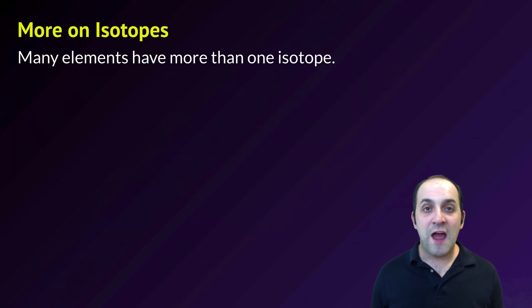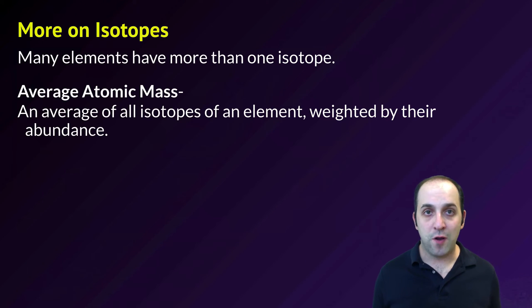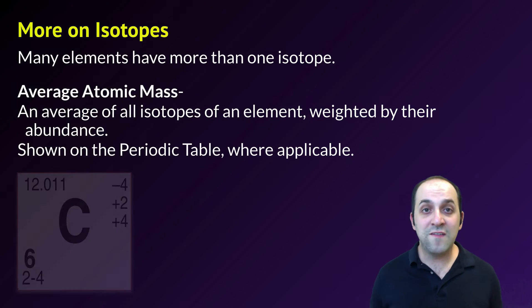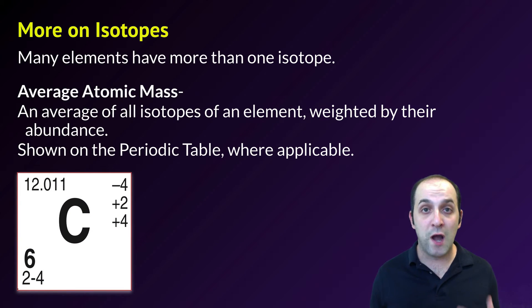So most elements are going to have more than one isotope, and the average atomic mass is just an average of all of the isotopes of the element that's weighted by their abundance. This is actually shown on the periodic table wherever it applies.